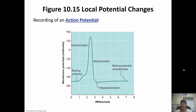Here's a recording of an action potential. Resting potential is at about negative 70 millivolts, then the stimulus occurs. If the stimulus is strong enough to cause a change to negative 55 millivolts, depolarization occurs. During depolarization, the sodium gates are open, so sodium is rushing into the cell, causing it to become more positive. Once it reaches its max at about positive 30 millivolts, the sodium gates close and the potassium gates open, so potassium starts leaving the cell, causing the cell to repolarize and become more negative.